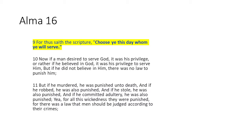People could take Joseph Smith's writings and say he made up this stuff in the 1800s — early America, everyone was talking about freedom and liberty, so this is just the Constitution rewritten. No, it's not. He's explaining what Joshua had written; maybe the founders understood that principle too. But notice what Alma goes on to say: if he murdered, he was punished unto death. If he robbed, he was also punished. If he stole, he was also punished. If he committed adultery, he was punished.